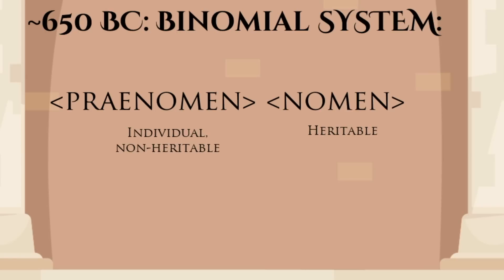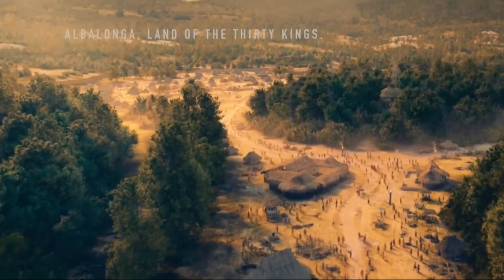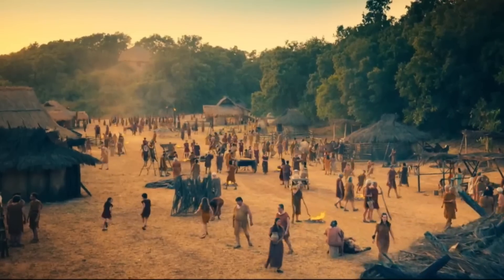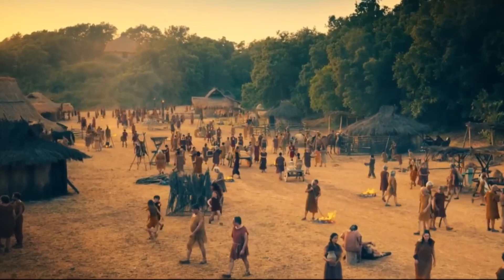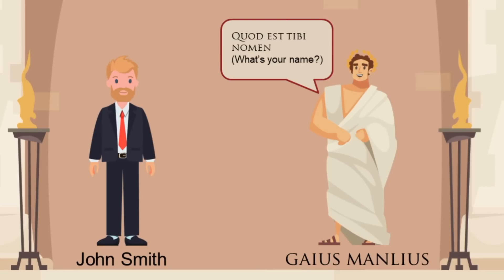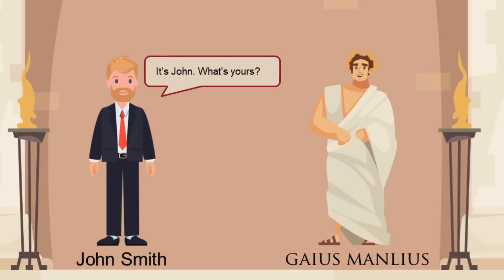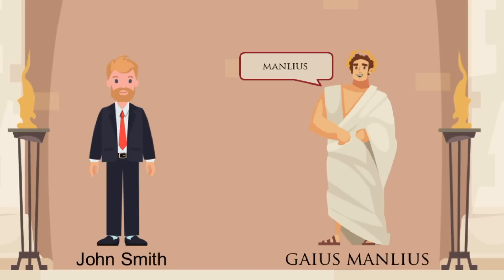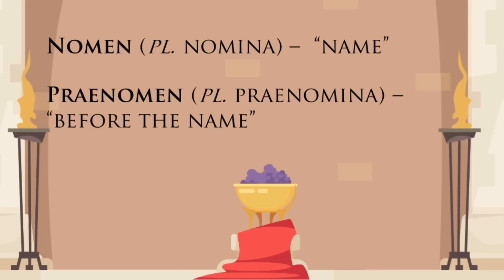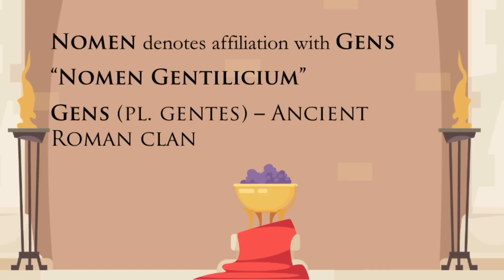The binomial naming system is of course very common for Indo-European languages. The unique feature of Latin in this regard is the relative importance between the two elements. While we, and a lot of other people throughout history, generally think of our personal name as our main name, for the Romans the family name was the most important. The secondary role of the Roman personal name is reflected by the word they used for it — Praenomen simply means 'before the name.' The Nomen told to which Gens this particular Roman belonged, which is why it was also called Nomen Gentilicium. A Gens is a wider extended family, sort of a clan.